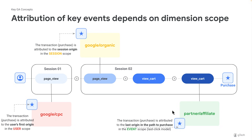And finally, for event scoped reports, the transaction or purchase is attributed to the last origin in the path to purchase, which in this case is the partner or affiliate UTMs that they picked up when they went out to that external website.